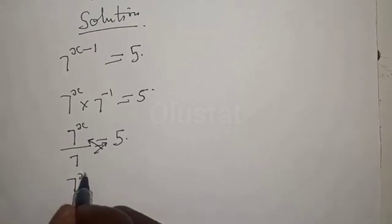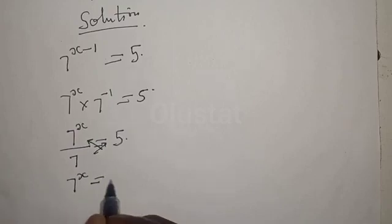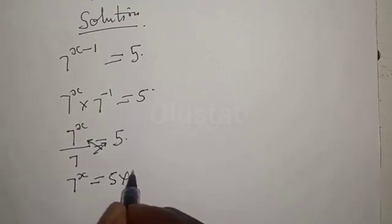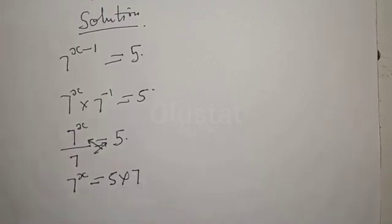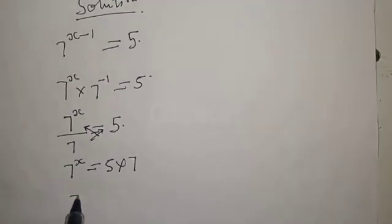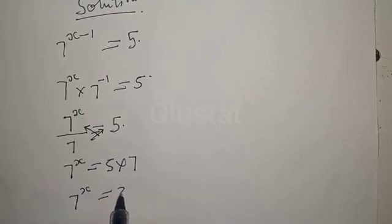Cross multiplying, 7 raised to power x is equal to 5 times 7, which is 35.